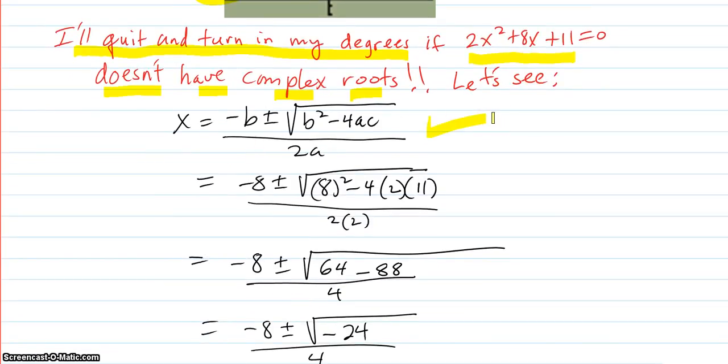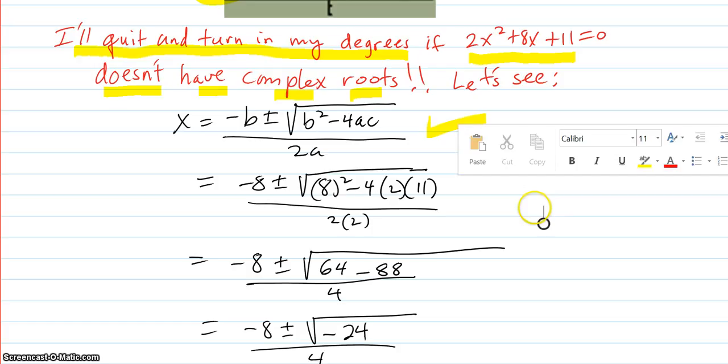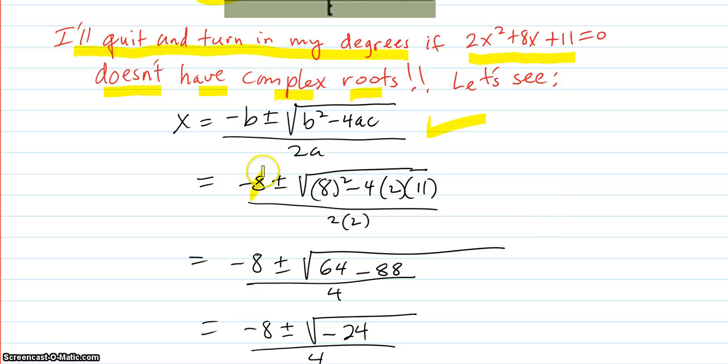Here's our quadratic formula. We plug in negative b, that's the 8, plus or minus b squared, minus 4ac. a, that's the 2, c, that's 11.